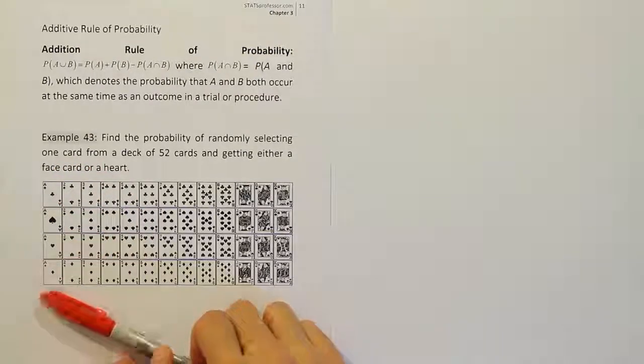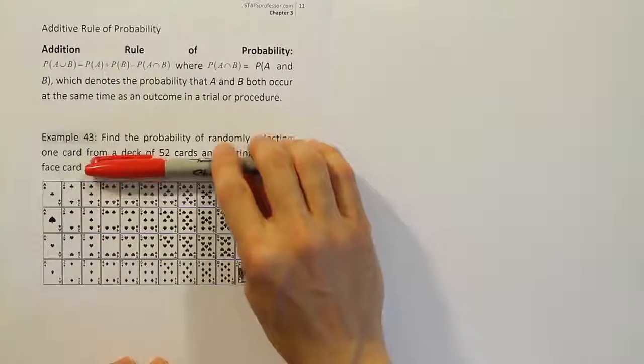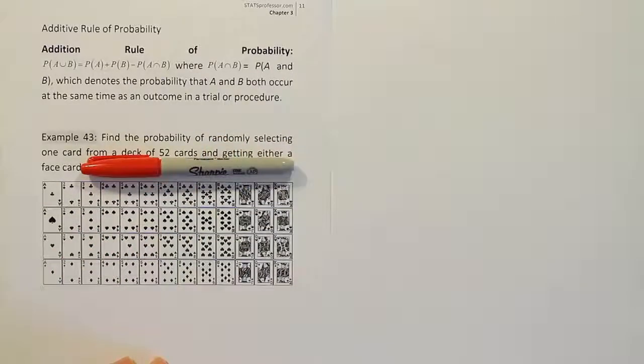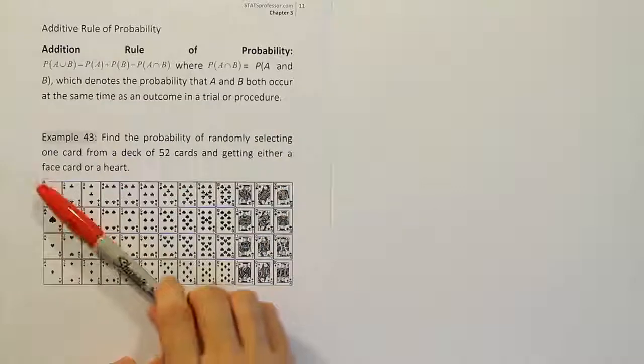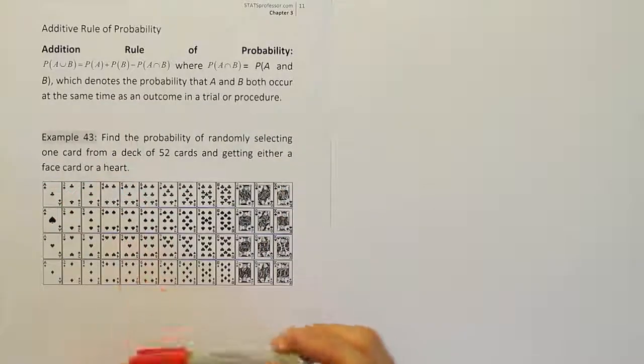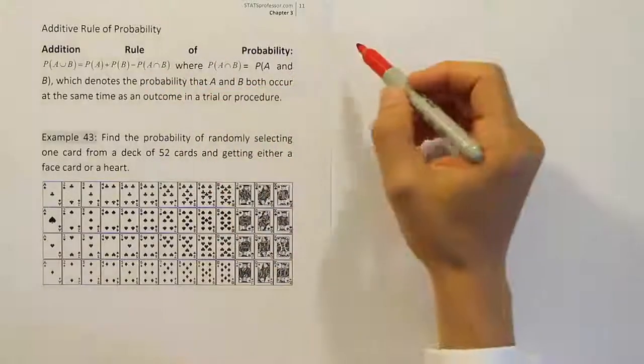So it's one card being face card or a heart. If it just said, for example, find the probability that it was only a face card, that would just be basic probability. But if it says face card or a heart, it now becomes the addition rule. So now that we know it's addition rule, let's go ahead and fill in the formula.